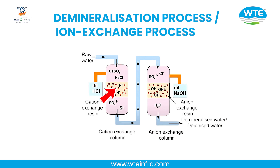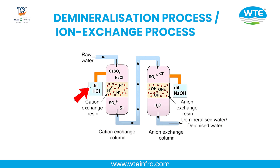When the H⁺ ions and the OH⁻ ions get exchanged with the cations and anions present in the water, we call such resins exhausted — that is, they are not capable of exchanging ions further. At this stage we can regenerate the resins. The cation exchange resin can be regenerated by passing dilute HCl, and the anion exchange resin by passing dilute NaOH. Now the resins are ready for use again.